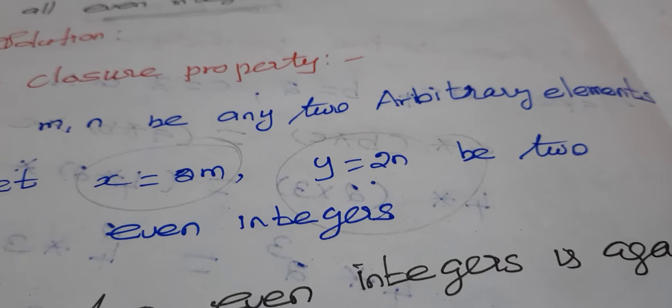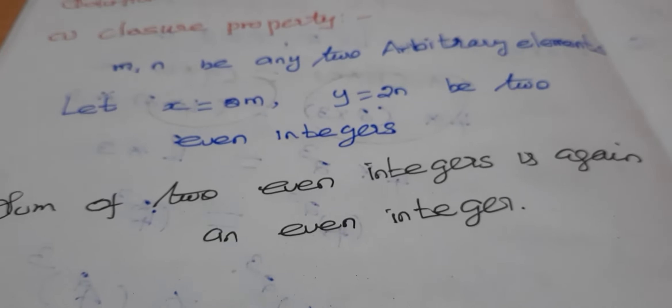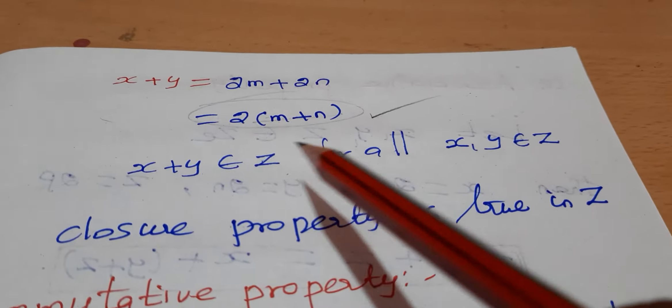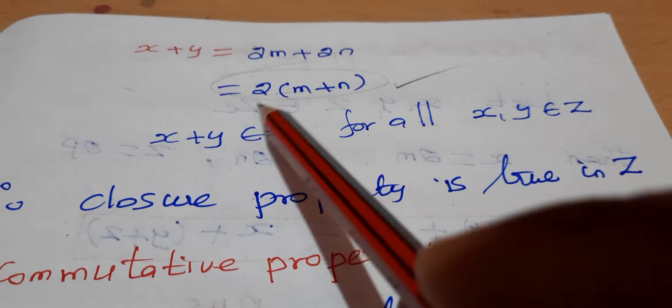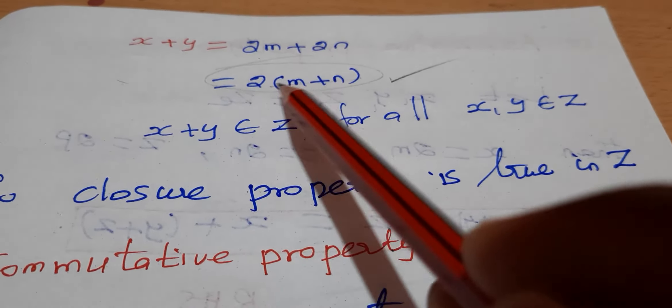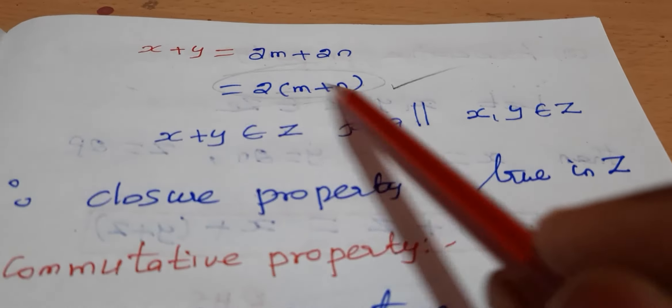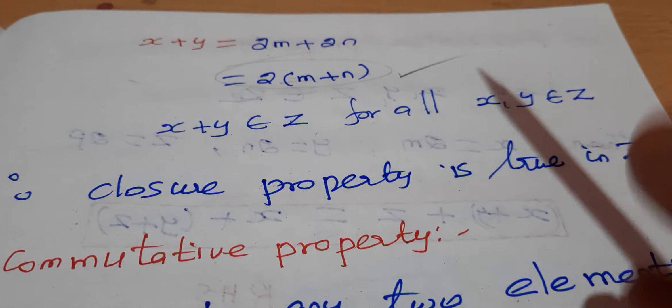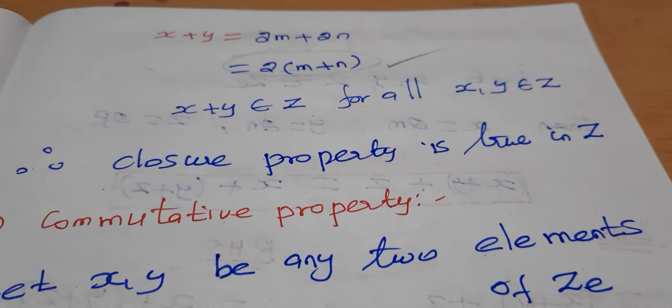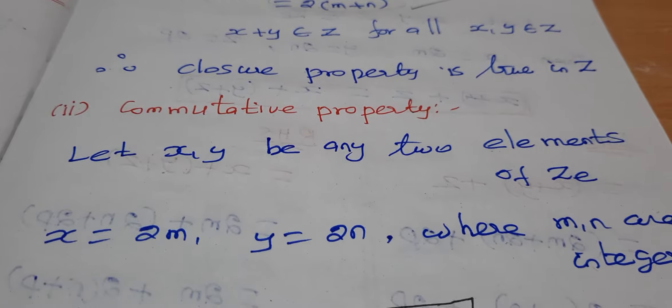For closure, we want to show that x plus y is also an even integer. Since x = 2m and y = 2n, x plus y = 2m + 2n = 2(m + n), which is 2 times something — an even integer. So closure property is true.